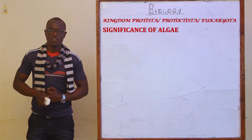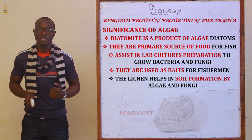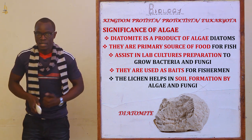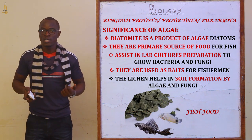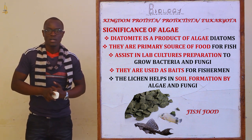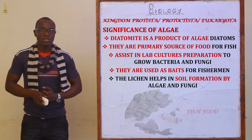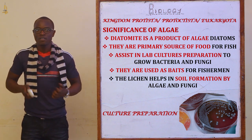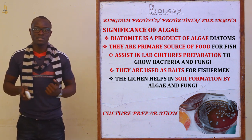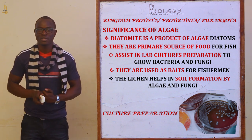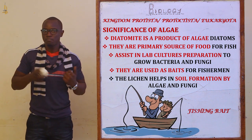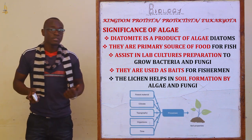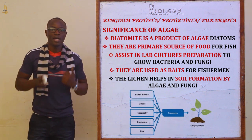What are the significance of algae? The first is that diatomite is a product of algae diatoms, originating from algae diatoms. They are also a source of food — the main source of food for fish living in aquatic environments. They also assist in lab culture preparation to grow different bacteria and fungi for testing different pathogens. They are also used as bait for fishermen and can be purchased commercially.